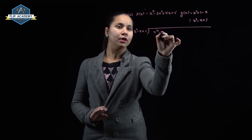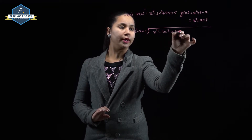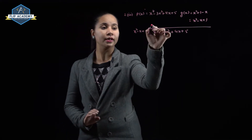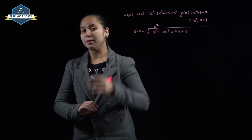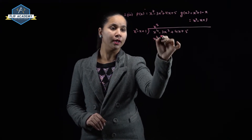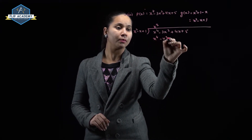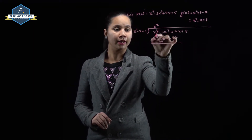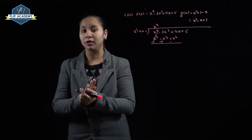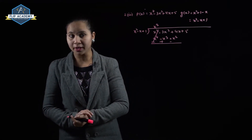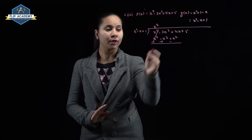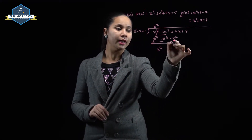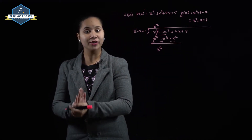Dividing x² into x⁴ gives x². Multiply x² by (x² - x + 1) to get x⁴ - x³ + x². Change the sign: minus, plus, and minus. x⁴ cancels. Since like terms are added or subtracted together, we bring down to get x³ - 4x² + 4x + 5.